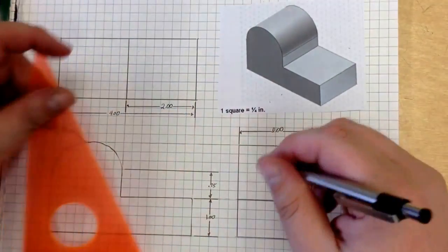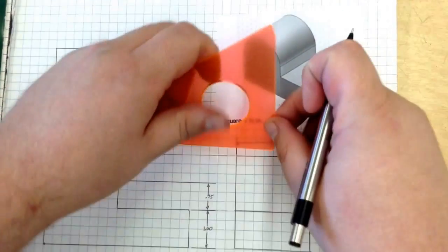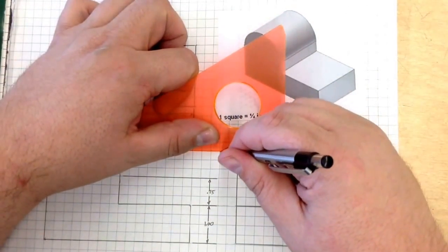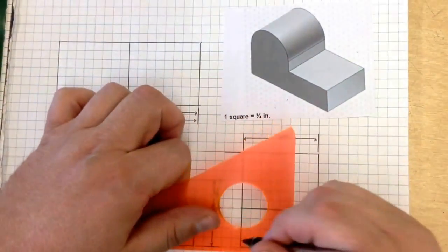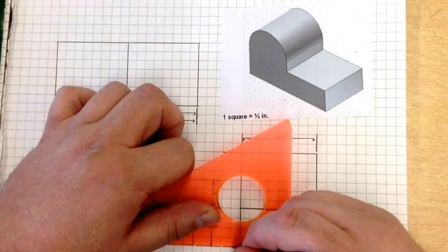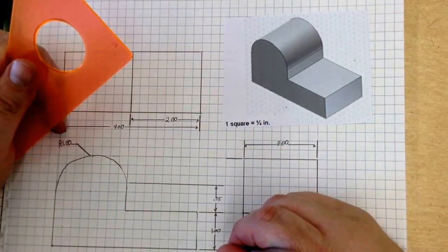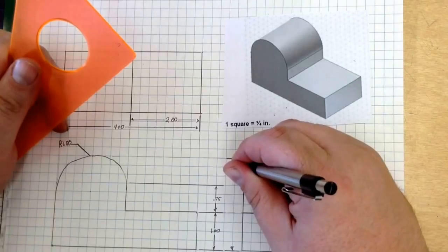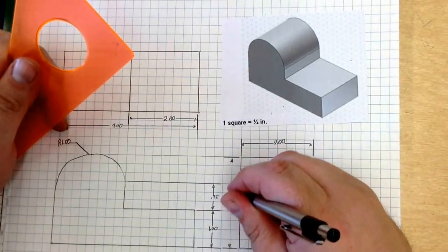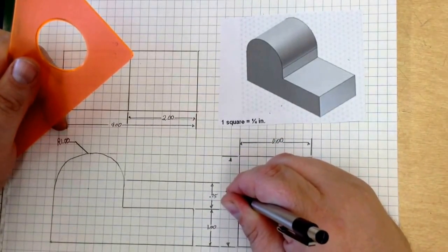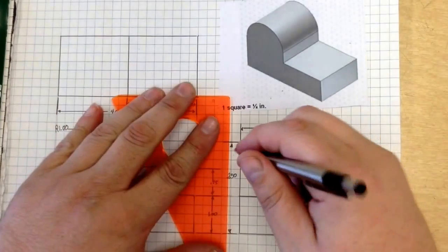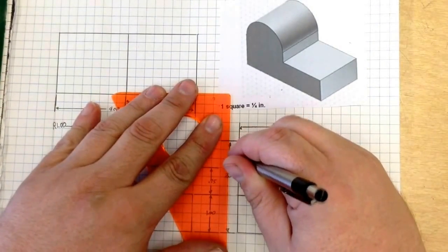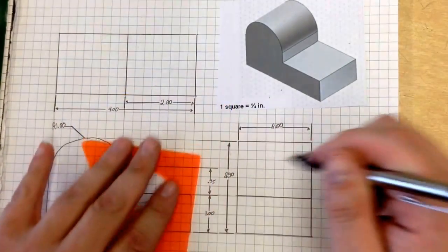And then lastly, a height measurement. So I will go right here, right there, give myself an arrow. And arrow, it is 2.50. Connect them like so.